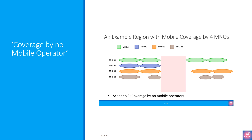Depending on where you are in the world, the name of the no-coverage area changes. The most common name is dead zones, to imply that the mobile coverage in that area is dead. Another popular name is not spots, implying mobile coverage in the area or the spot is not available. Another term commonly used is black spot, to imply the coverage in the area is not there, so it's dark or black.